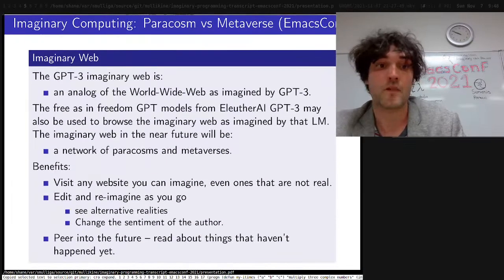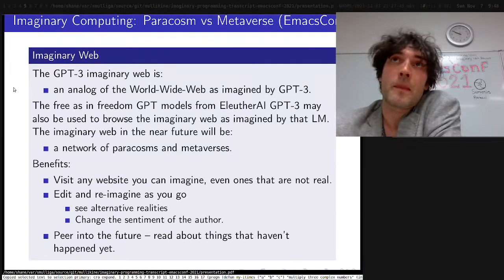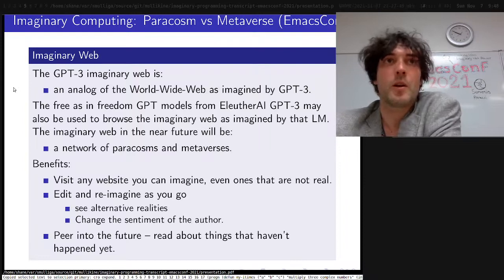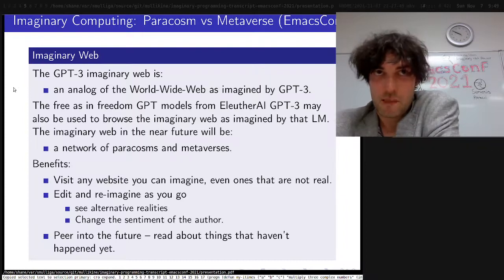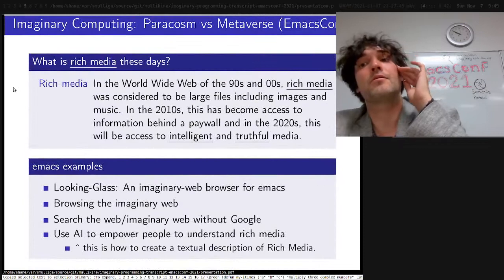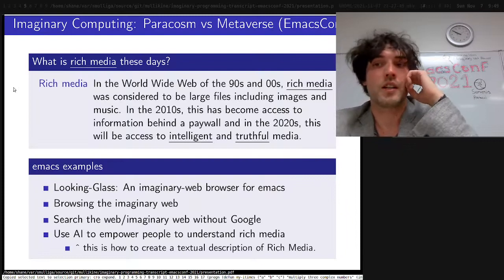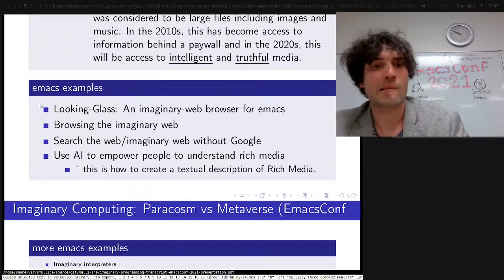I have a potential way of doing that, but firstly I'll talk about the imaginary web briefly. The thing about these language models is they can replace basically everything on the internet — your Wikipedia or Stack Overflow, conversation with real people replaced by chatbots, basically anything there's a website for. Rich media has gone from images and video and paywalls to now being intelligent and truthful, because generating fictional websites is going to become very easy and actually the most useful way to do it. So then you need a source of truth — the imaginary web is a thing.